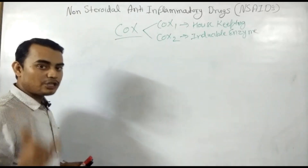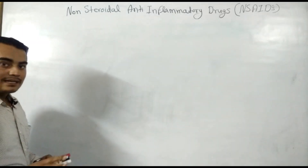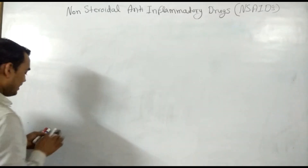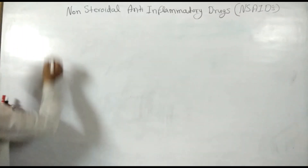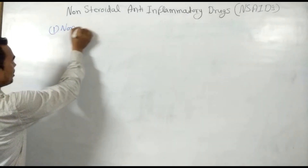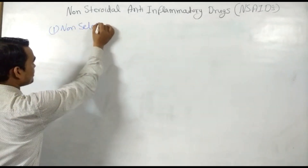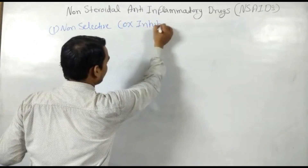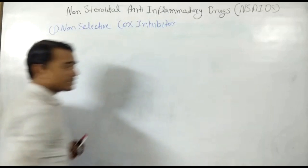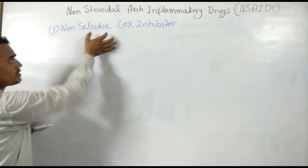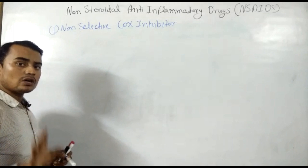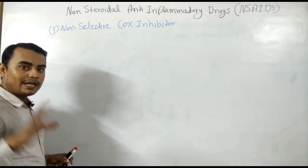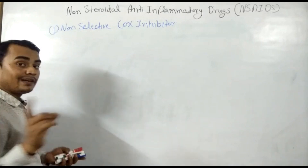So here we will discuss the classification of NSAIDs. NSAIDs are basically classified into four classes. The first class is non-selective COX inhibitor. Non-selective COX inhibitor, as its name indicates, is non-selective — that means it inhibits COX-1 as well as COX-2. Non-selective COX inhibitors have various subclasses, so how will you remember the various subclasses?